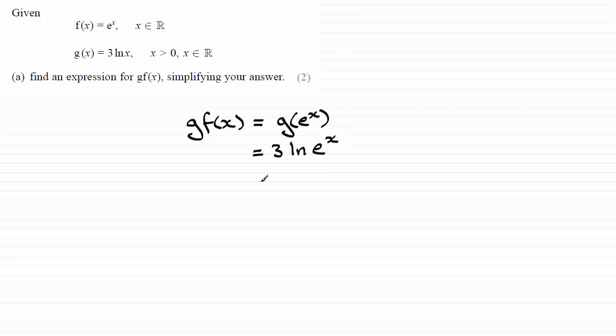Now I can use the power rule for logs, that is that I can bring the x to the front here of the log, and that gives me 3x times the natural log of e. And we should know that the natural log of e is 1, so that's just going to leave me with 3x.